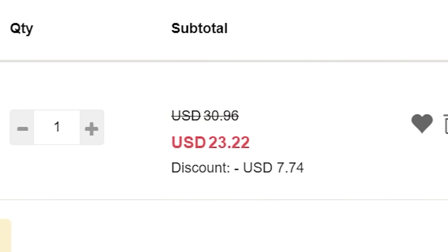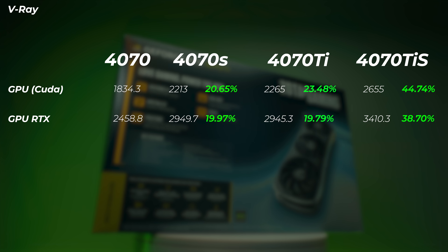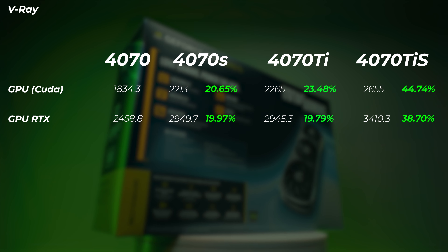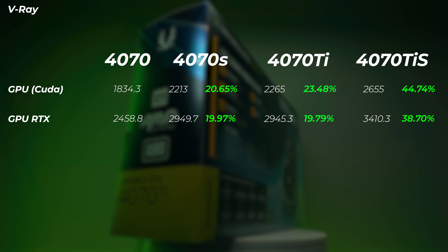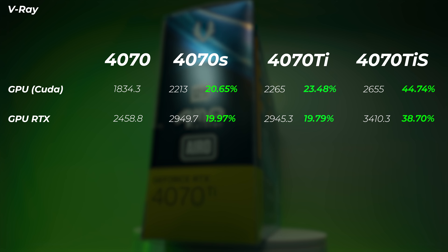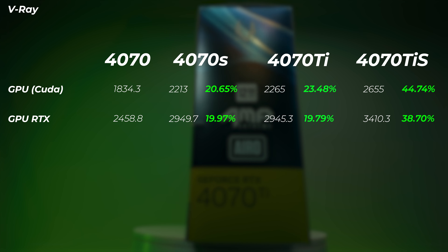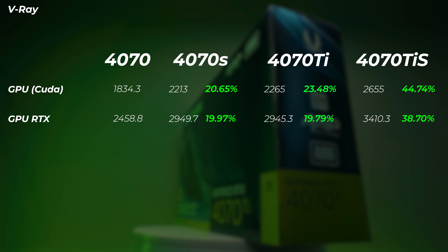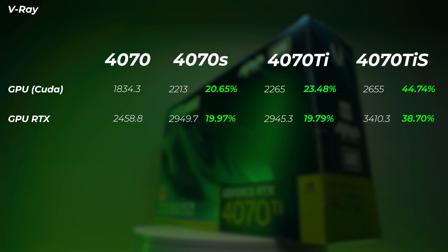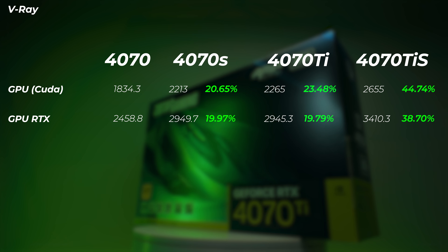If you're on an older 10 or 20 series card, you might actually want to look at a used RTX 3090, which can be found for less than the Ti Super's price and is slightly faster in DaVinci Resolve. Check out the all-GPUs-compared video for consistent benchmark comparisons. Individual GPU reviews also compare against AMD and Intel equivalents, so you can evaluate whether to go Nvidia, AMD, or Intel.